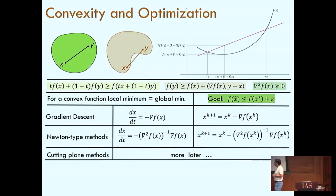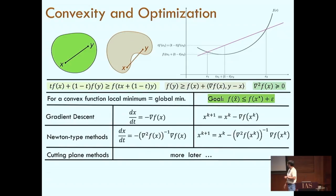And cutting plane methods. In my view, these are the ultimate methods, at least from the point of view of P versus not-in-P. These are not the fastest methods, but these are the most powerful methods. I will talk about this towards the end of my talk. Examples of this method include the ellipsoid method, which many of you here probably already know about.